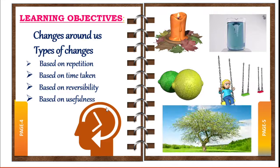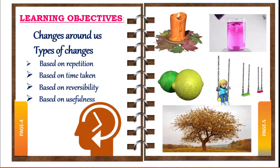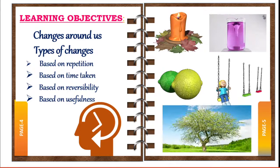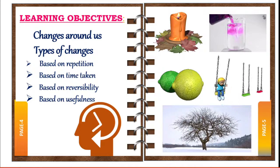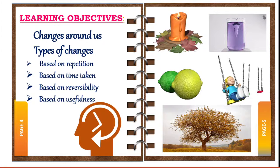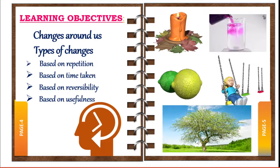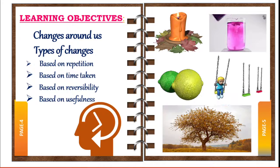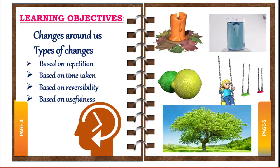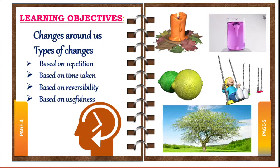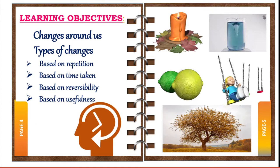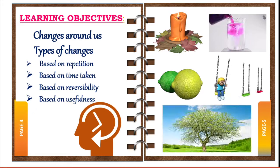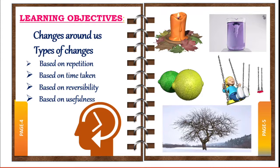We have many substances around us. All these substances have certain properties such as state, size, shape, color, smell, temperature, and composition. When one or more properties of a substance become different, we say that a change has taken place in it. For example, melting of ice involves a change in state from solid state to liquid state.